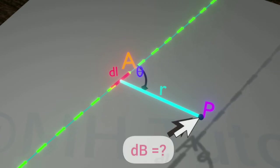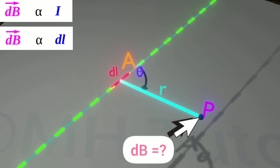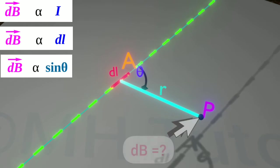If the produced magnetic field at P is dB, then Biot-Savart law says dB is proportional to I, the amount of current flowing through the wire, to the length of the portion of the wire which is DL, to sine theta, where theta is angle formed by DL and R.